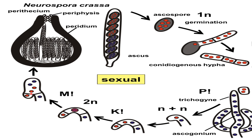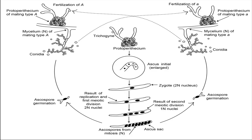Conjugate division and septation of the crozier take place; four nuclei are distributed so that the terminal cell has one nucleus and the basal cell has one nucleus. The penultimate cell with the dikaryon is seen, and the two nuclei of the penultimate cell fuse to form a diploid nucleus. This cell acts as the ascus mother cell and elongates to form a club-shaped or cylindrical ascus. The diploid nucleus first divides meiotically and then mitotically, resulting in the formation of eight haploid nuclei.